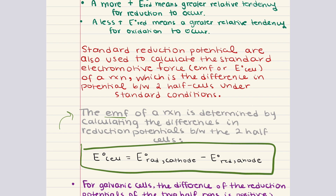It's crucial not to multiply the standard potentials by the number of moles oxidized or reduced, because the potential of each electrode is independent of the amount of material and depends only on the identity of the material. The standard reduction potential of an electrode will not change unless the chemical identity of that electrode changes.